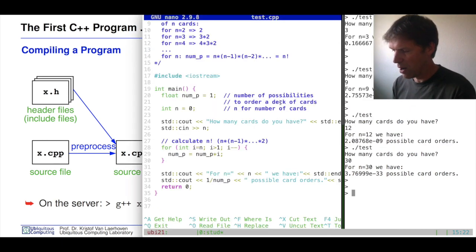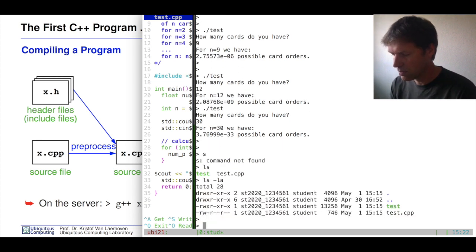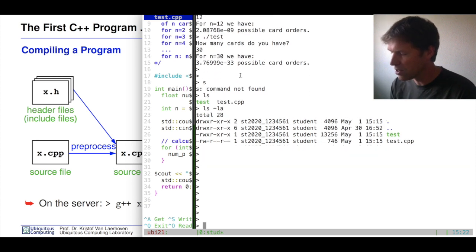So for instance, for our example that we just had, we can look at our directory here. Look how big this is over here. So our test.cpp is a little bit bigger than our first little example that we had. It's a few hundred bytes, but our executable is 13 kilobytes. Now what is in these 13 kilobytes? It's basically lots and lots of instructions that tell the computer and the operating system what needs to be done.